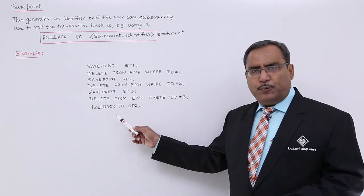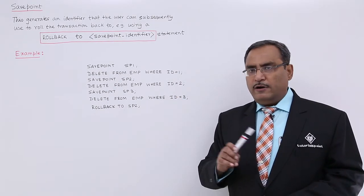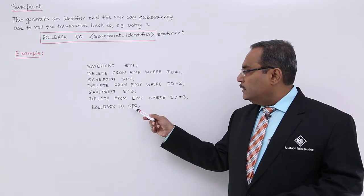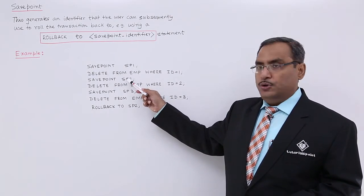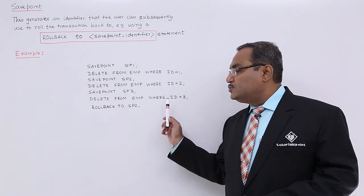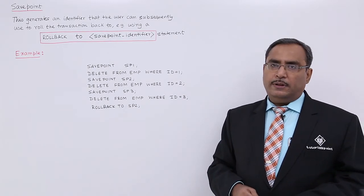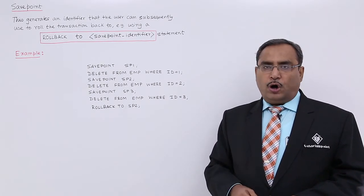You will find that, that employee record with ID is equal to 1 has got deleted. You cannot find that one, because you have done the rollback up to SP2. But this ID is equal to 2 and ID is equal to 3, again, these two IDs will be finding the respective tuple in the EMP table. And that is the advantage of this SavePoint.